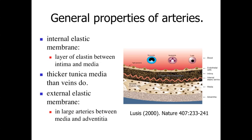Arteries in general are going to have a thicker tunica media than veins do. The reason for that is that we need the smooth muscle cells to allow the vessels to expand and recoil without damage. We also need the smooth muscle cells there to constrict, to regulate blood flow and control blood pressure.